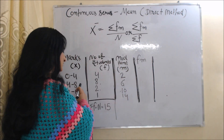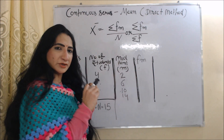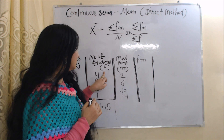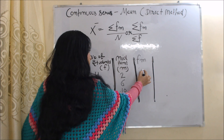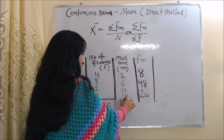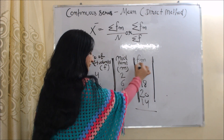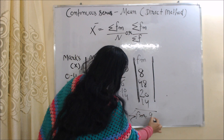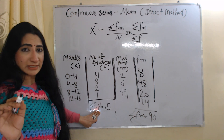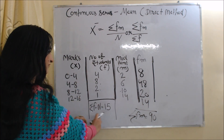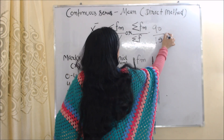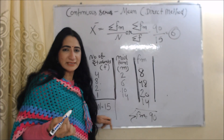After calculating the midpoints, we need to find fm by multiplying f with m. So: 4 × 2 = 8, 8 × 6 = 48, 2 × 10 = 20, and 1 × 14 = 14. The sum total of all fm values equals Σfm, which is 90. The total number of students equals Σf, which is 15. Putting values into the formula: 90 / 15 = 6. So 6 is our mean, or x̄.